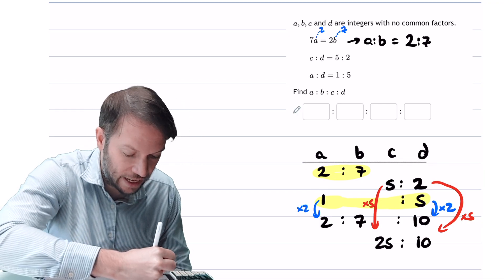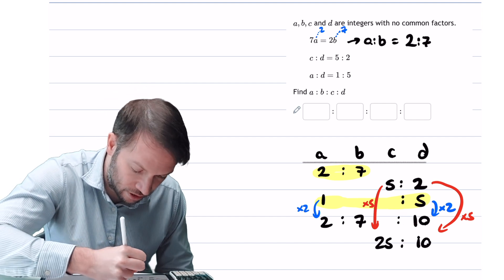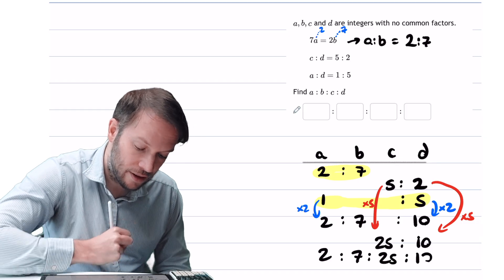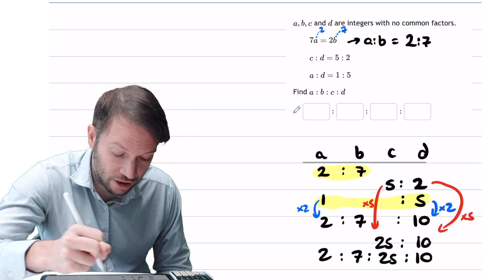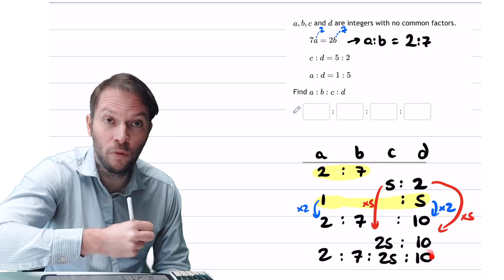And now because these two 10s are the same, we can just combine these two ratios together. So it's going to be 2 to 7 to 25 to 10, and we are done. And this ratio doesn't simplify any further because there's no common factor between all four of these numbers.